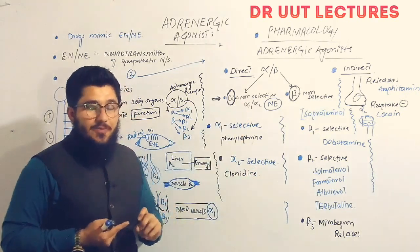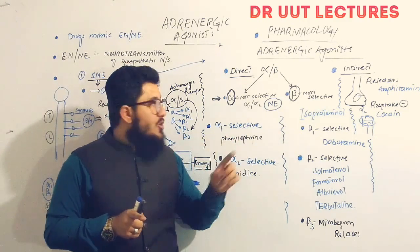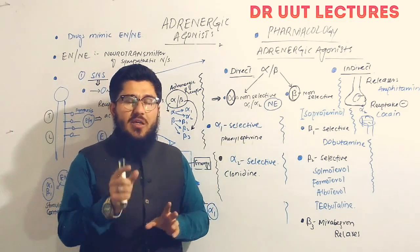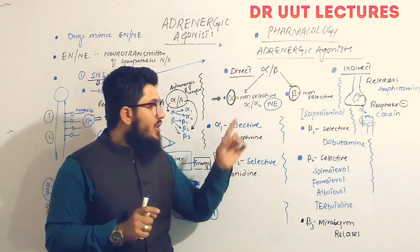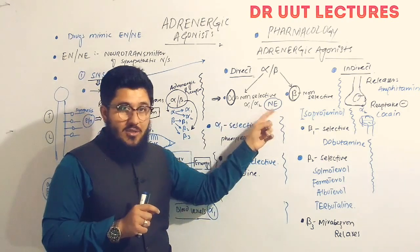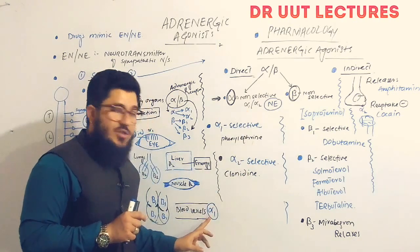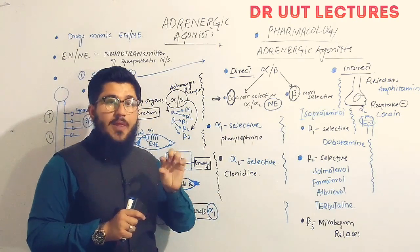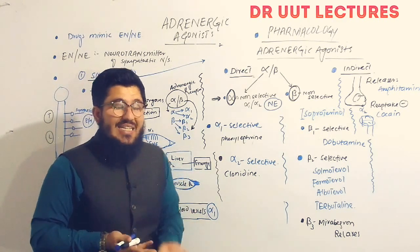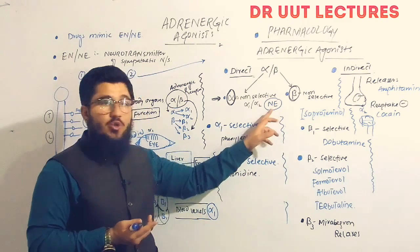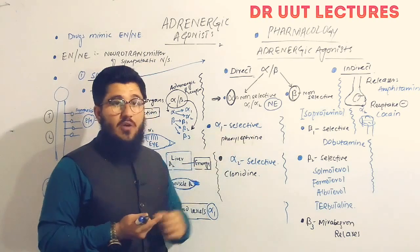Alpha non-selective drugs act on both alpha-1 and alpha-2 receptors. An example is norepinephrine. Norepinephrine is used clinically in conditions of shock, because it shows more action on alpha-1. When alpha-1 is stimulated, it causes contraction of the blood vessels. In cases of hypotension, we need to increase blood pressure, so we use norepinephrine. There is no other significant therapeutic clinical use for norepinephrine.